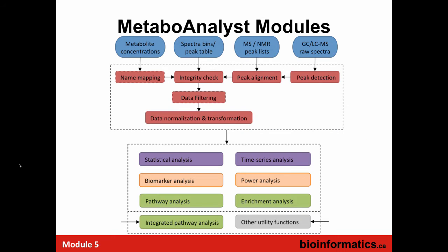Another way of looking at it is in a flow chart, separating the types of data you can get — whether it's NMR, MS, GC-MS, raw spectra, peak tables, or tables of concentration. There are essentially four different types of input. Then there's the initial data analysis and integrity check, which is marked in red. This includes name mapping, data integrity check, peak alignment and peak detection for peak lists, filtering steps, scaling, transformation, and normalization.